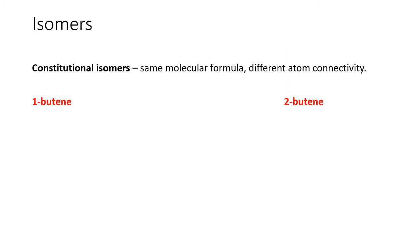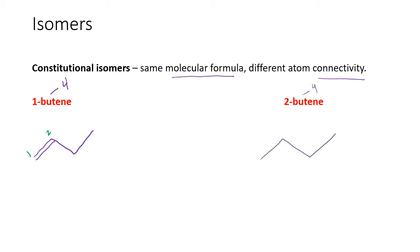Constitutional isomers are molecules that have the same molecular formula but different atom connectivity — the atoms are connected in different ways. If we compare 1-butene to 2-butene: bute is the prefix for four, so there are four carbons in the chain. The 1 indicates a double bond between carbons one and two, while the 2 in 2-butene means a double bond between carbons two and three. These two would be considered isomers of one another.